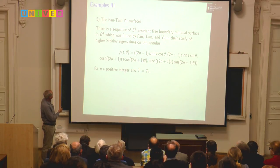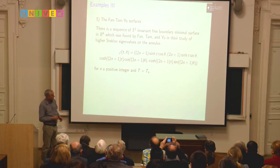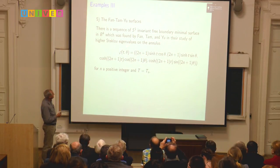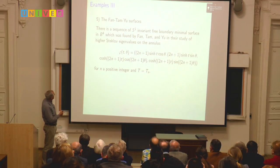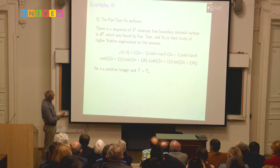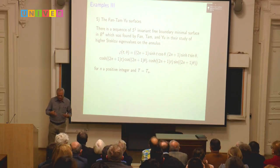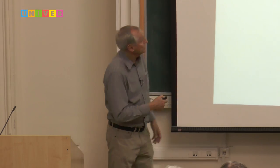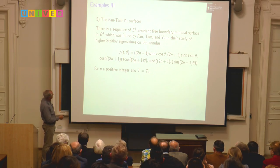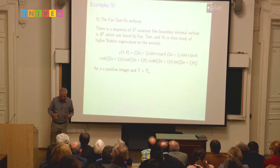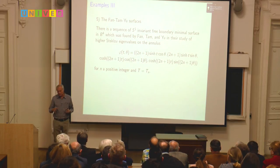People have been constructing many more examples recently. Fan, Tam, and Yu constructed an infinite number of S^1-invariant free boundary minimal surfaces in B^4, found by studying maximizers for higher Steklov eigenvalues for S^1-invariant metrics on the annulus, giving a whole sequence of minimal embeddings of the annulus in B^4. Cones over minimal submanifolds of the sphere are also natural: the cone over a minimal submanifold of the sphere is a singular minimal submanifold of Euclidean space, playing an important role in regularity theory, and the part inside the unit ball is a free boundary minimal surface.